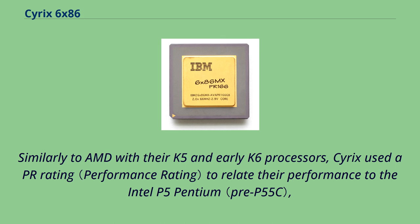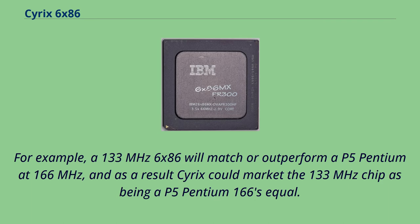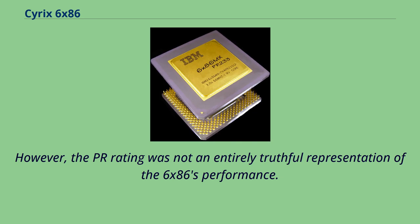Similarly to AMD with their K5 and early K6 processors, Cyrix used a PR rating to relate their performance to the Intel P5 Pentium, as the 6x86's higher per-clock performance relative to a P5 Pentium could be quantified against a higher-clock Pentium part. For example, a 133 MHz 6x86 would match or outperform a P5 Pentium at 166 MHz, and as a result Cyrix could market the 133 MHz chip as a P5 Pentium equivalent. However, the PR rating was not an entirely truthful representation of the 6x86's performance.